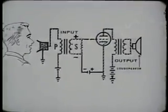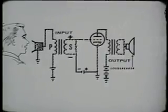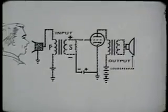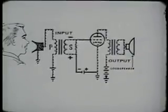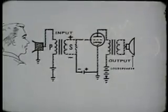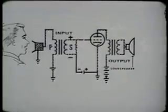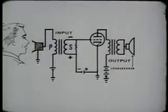We can then apply this energy to the grid of a vacuum tube and thus cause the current through the tube to vary in accordance with the voltage applied to the grid. The changing current flow through the tube can now be used to develop a much higher voltage across a plate load and either drive a speaker or another amplifier tube. Each of these steps causes a loss of a portion of the energy.